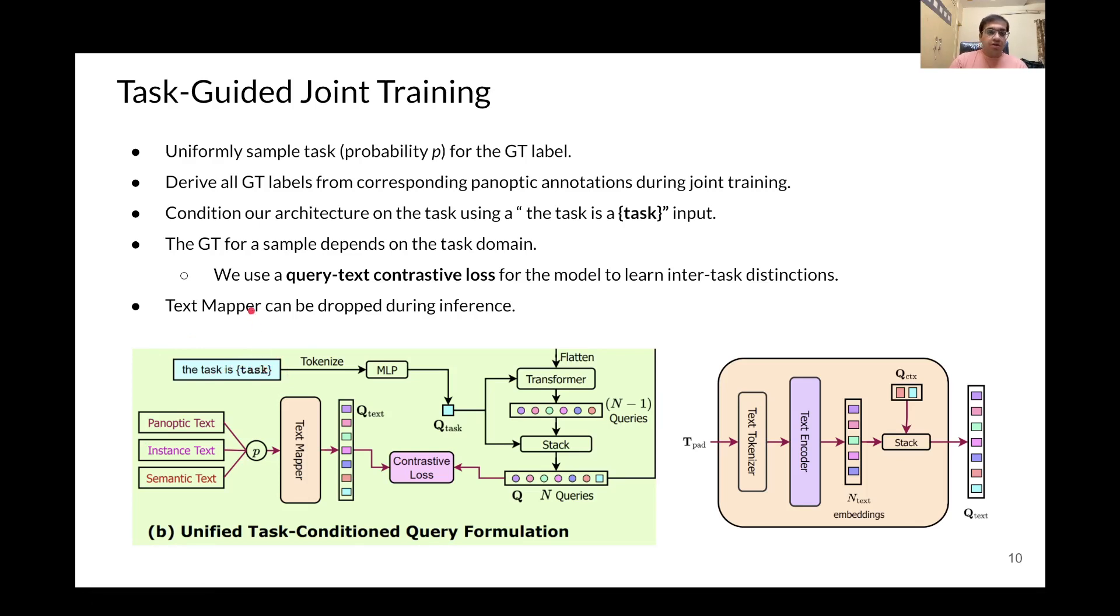The ground-truth for a sample depends on the domain of the task and thus, we use a contrastive loss to align our object queries with a set of input text list that is derived from the ground-truth label for the task at hand. And the input text list is mapped to a set of text queries using a text mapper, which can be dropped during inference. Thus, the text mapper parameters are only used during training.